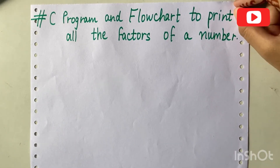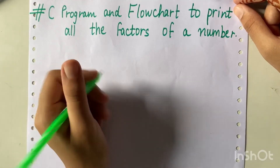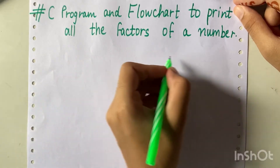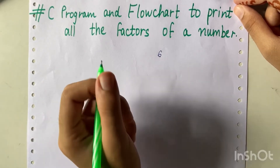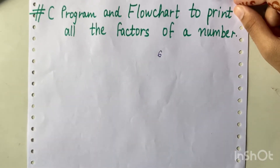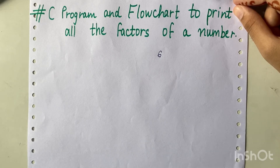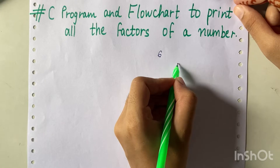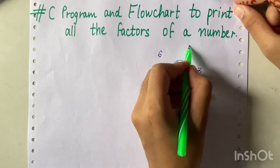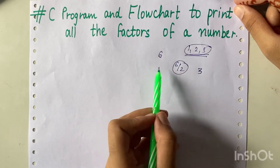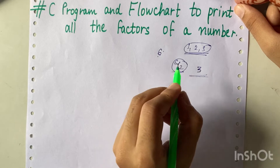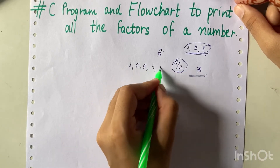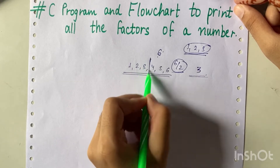Let me first show you some rough work where we decide how we are going to find the factors. We have the number six, and as I told you the factors are one, two, and three. These lie in the first half of the number — the half of six is three — and the factors lie in the first half. That means we need to run our loop till half of the number.